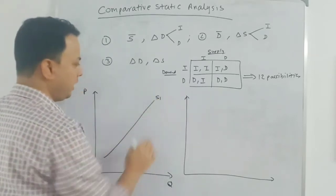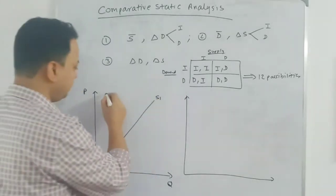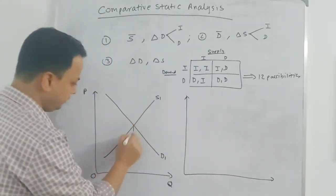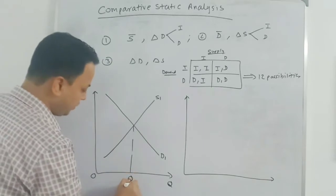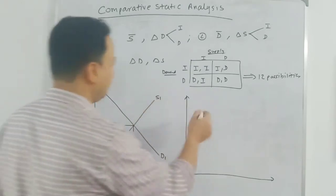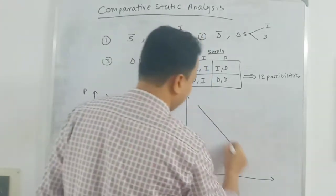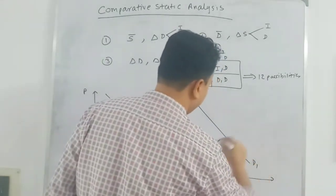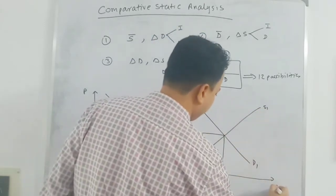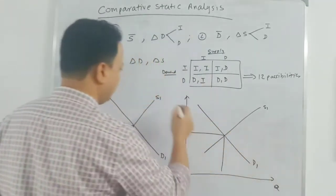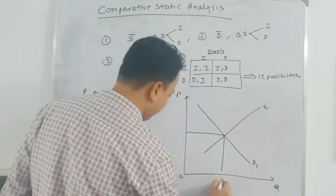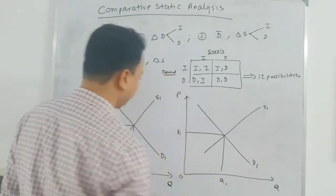This is the supply curve S1, and D1 is my initial demand curve. The initial equilibrium is at Q1, P1. When demand increases, at the new equilibrium price will be higher and output will be higher. This is comparative static analysis — we compare the old equilibrium with the new equilibrium.